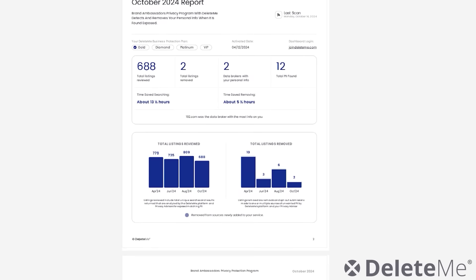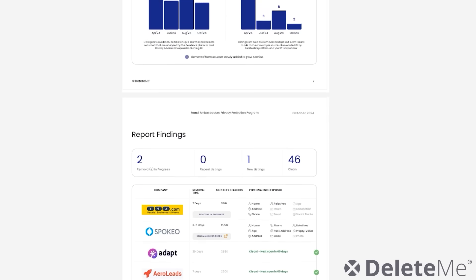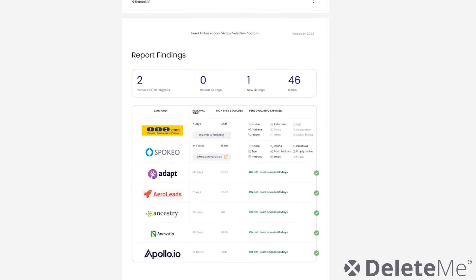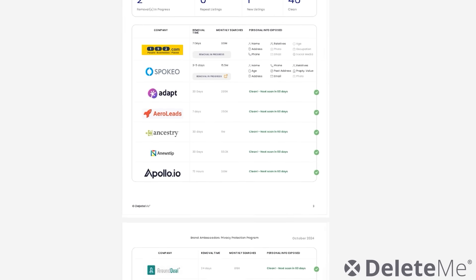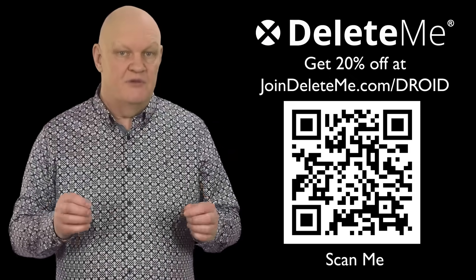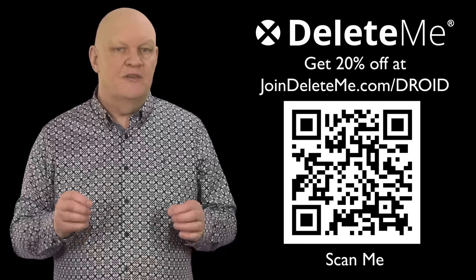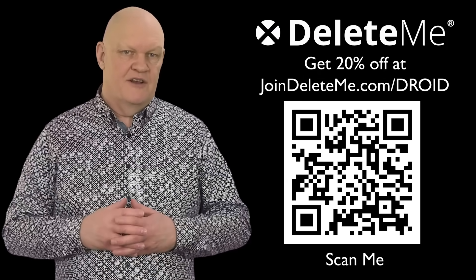You receive regular privacy reports to show how much data was found, where it was found, and where it was removed from. You can do this for yourself or for your family. And if you use the JoinDeleteMe.com/droid link in the description below or you scan the QR code next to me today, you'll get a 20% discount. So if you value your privacy, I'd check them out now.